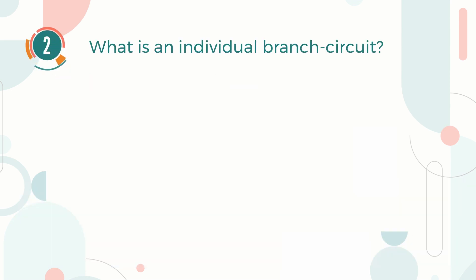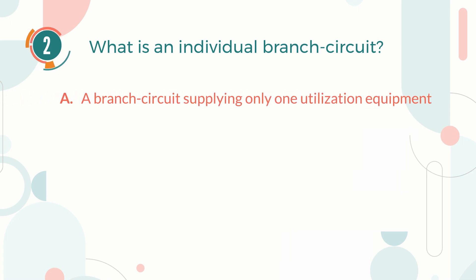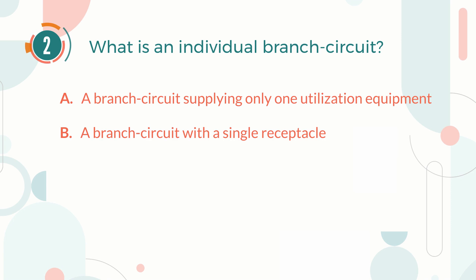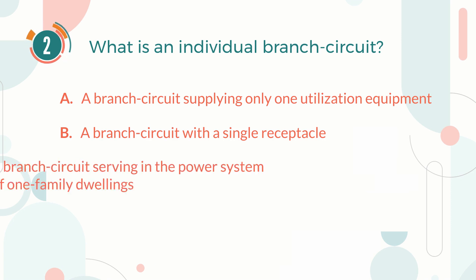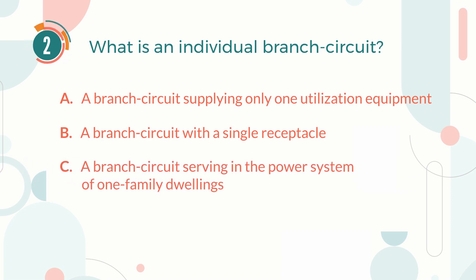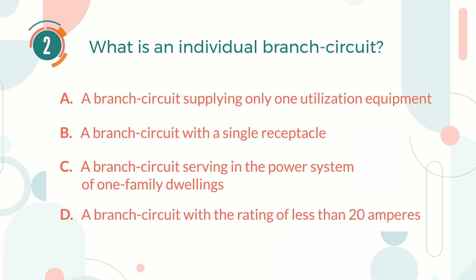Number 2. What is an individual branch circuit? A. A branch circuit supplying only one utilization equipment. B. A branch circuit with a single receptacle. C. A branch circuit serving in the power system of one-family dwellings. D. A branch circuit with a rating of less than 20 amperes.